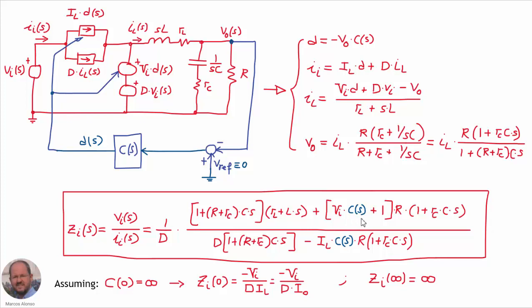There are important points for the input impedance of our converter — for example, the input impedance at zero frequency, the DC input impedance. In this case, if we assume that at zero frequency the compensator is going to have an infinite gain, which is the usual situation because we want to have a pole at the origin in order to make null the error at steady state, then by applying frequency equal to zero, we can obtain the value of the input impedance at low frequencies. We can see that this corresponds to a negative value: the input voltage divided by the DC value of the duty cycle and divided by the DC value of the output current.